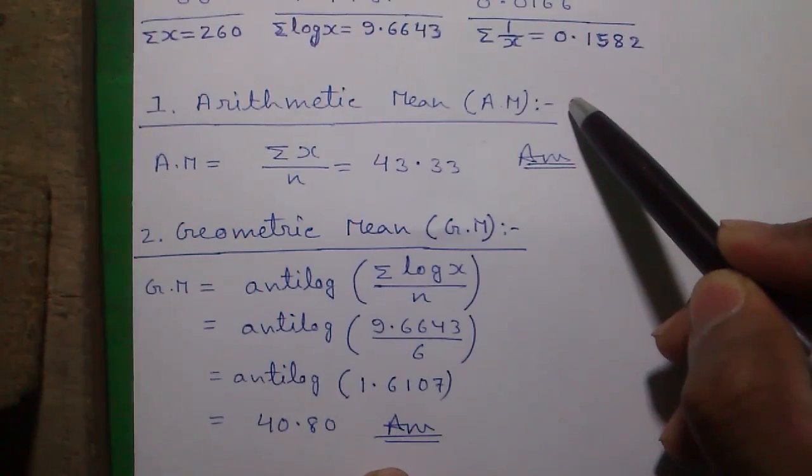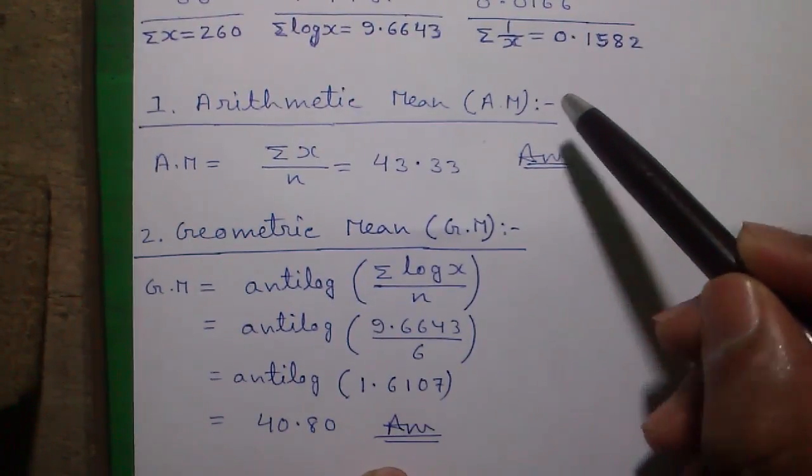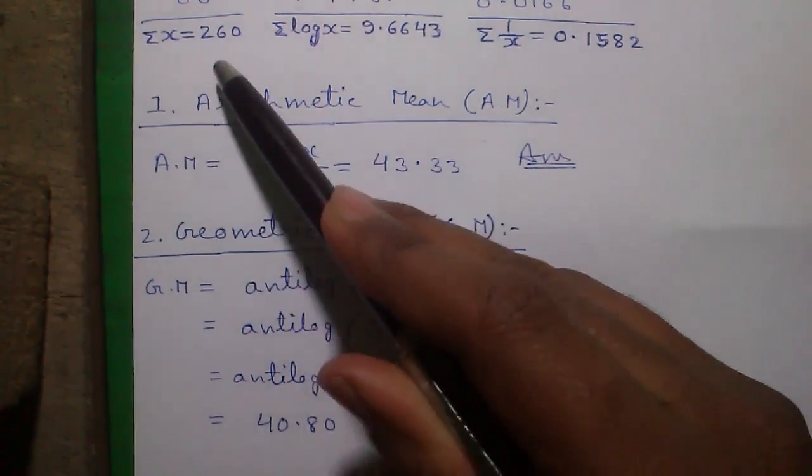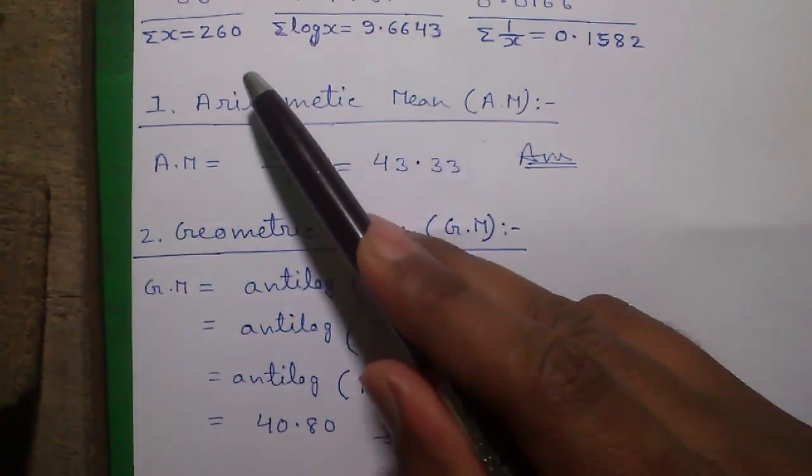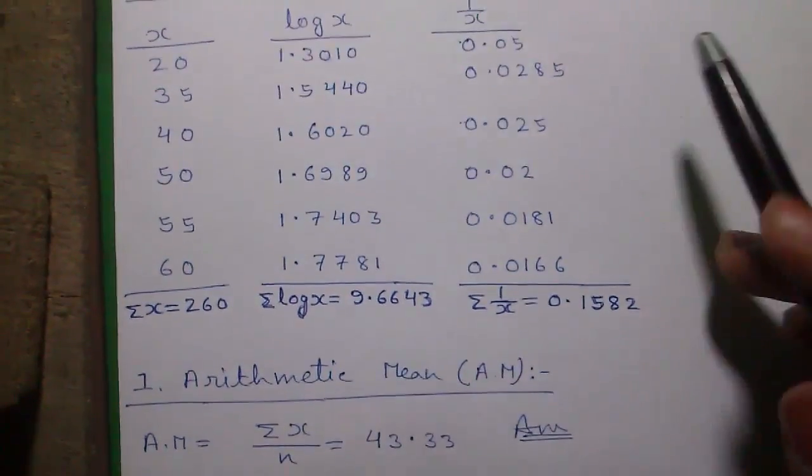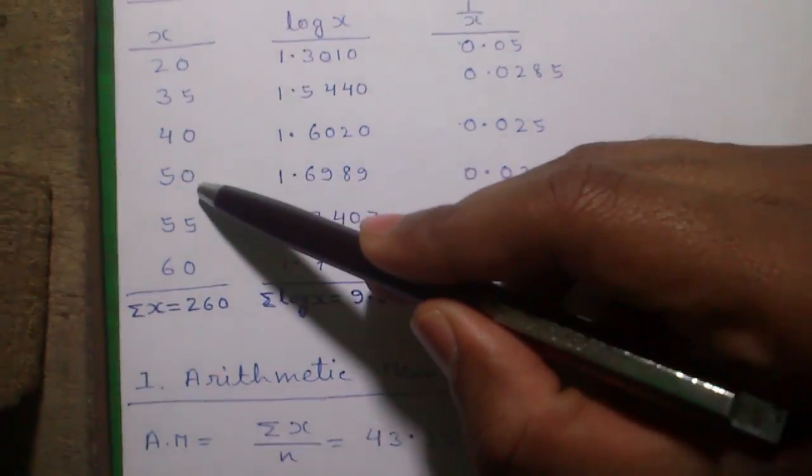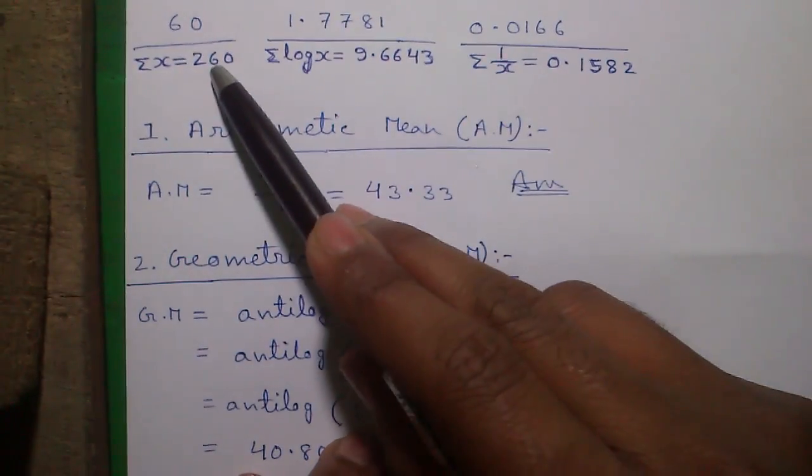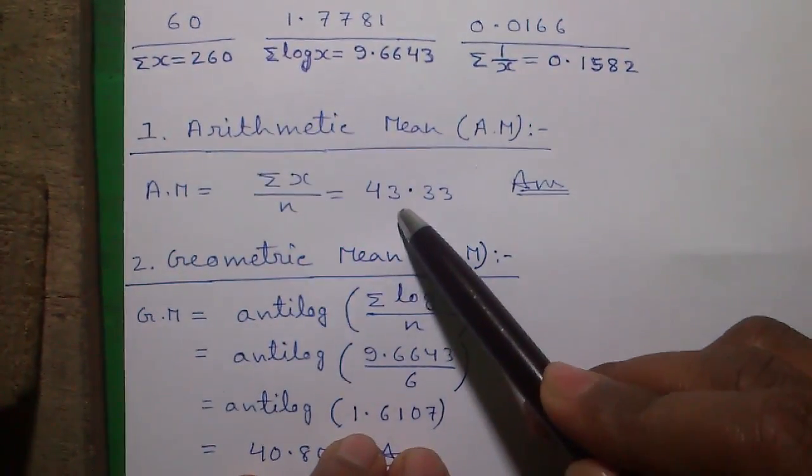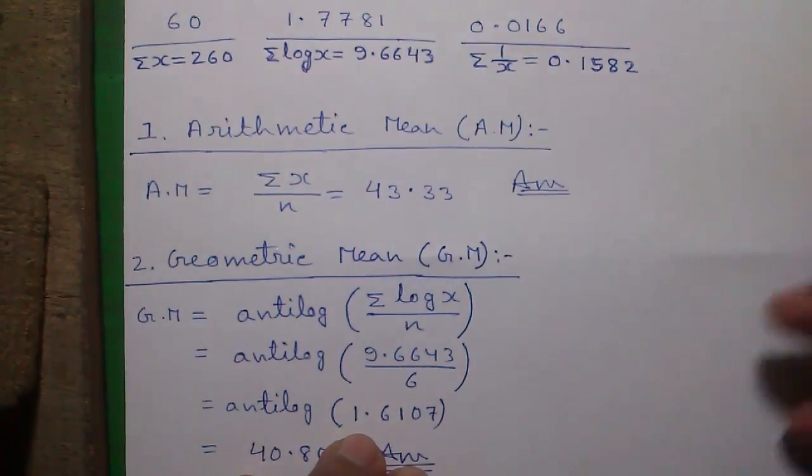So the arithmetic mean is the simplest of all the means. Arithmetic mean equals sum of all x values divided by number of samples. So number of samples are 6. 260 divided by 6 equals 43.33. This is the arithmetic mean.